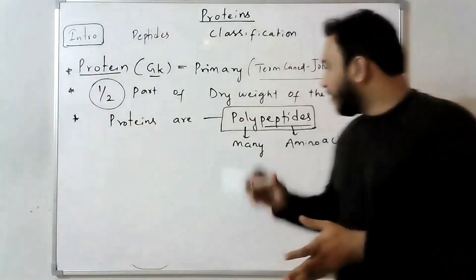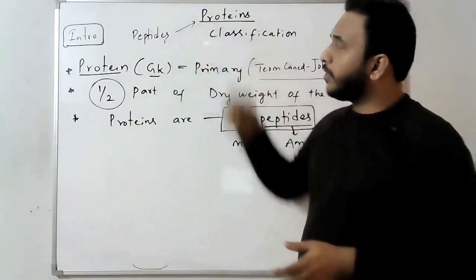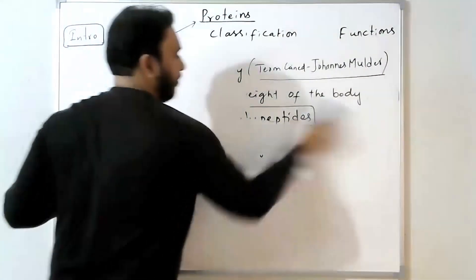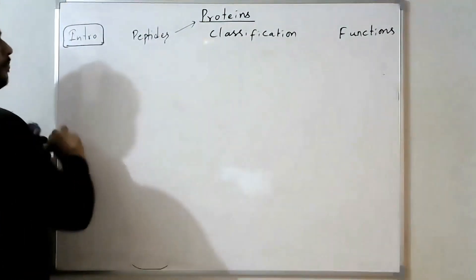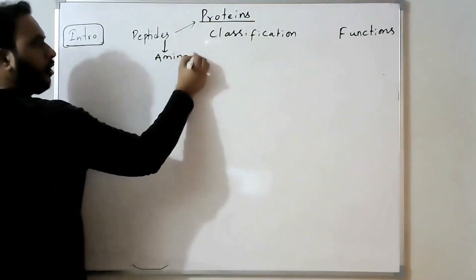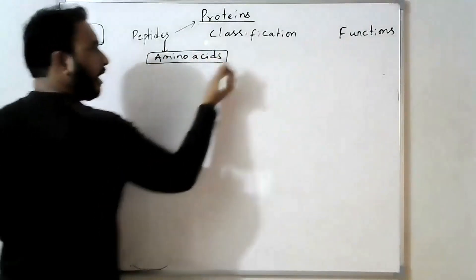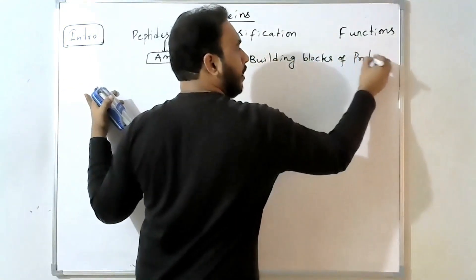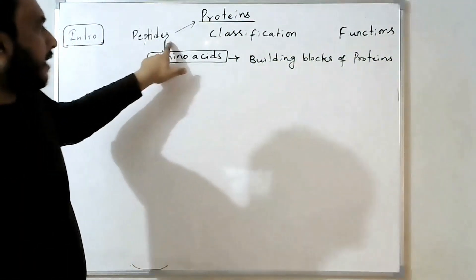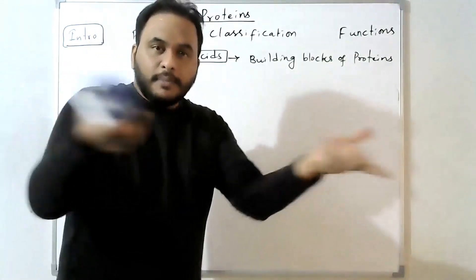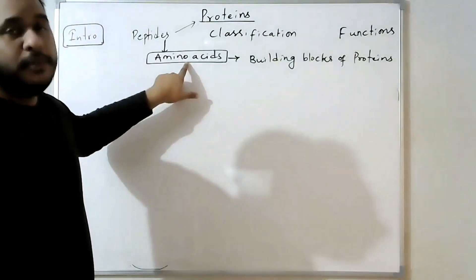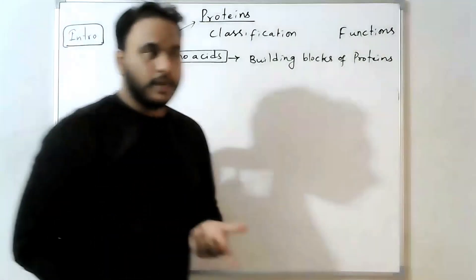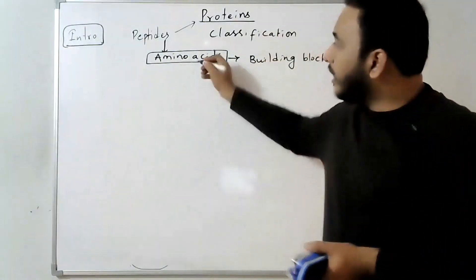Who forms the proteins? Peptides form the proteins. Peptides are otherwise known as amino acids — they are the building blocks of proteins. A building is made up of bricks, and these bricks are nothing but amino acids, and that building is the protein. If you break the protein, you will get amino acids.